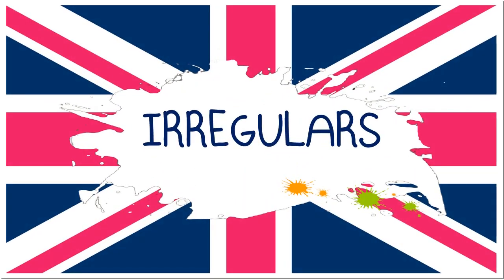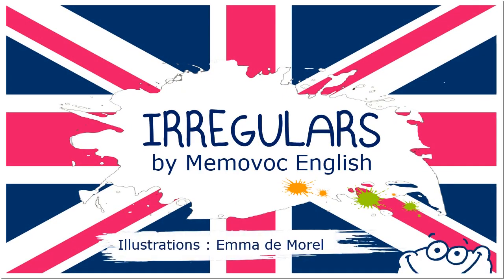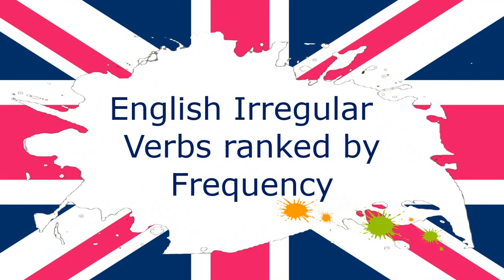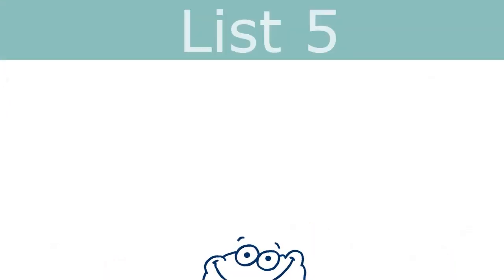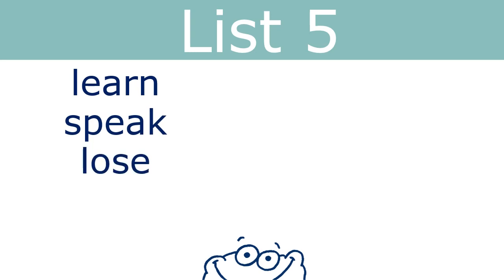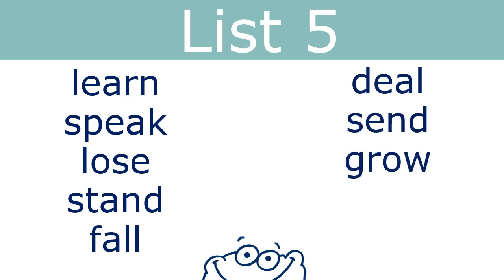Irregulars by Memovog English. English irregular verbs ranked by frequency — List number 5. Learn, Speak, Lose, Stand, Fall, Deal, Send, Grow, Light, Sit.